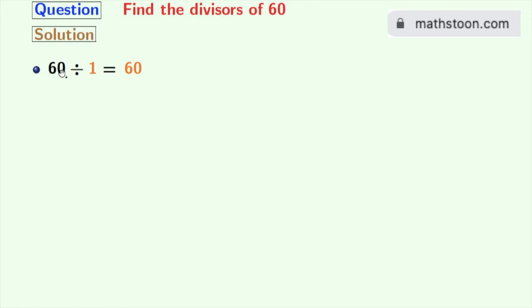Now if we try for 2, we get 30. So 2 and 30 are the divisors of 60.